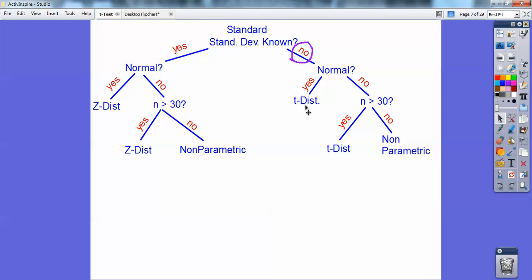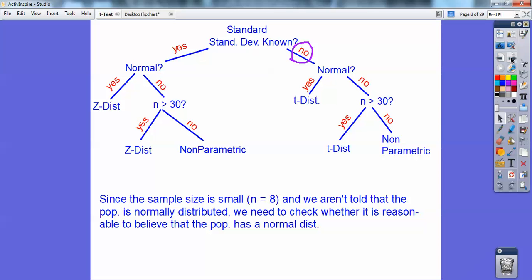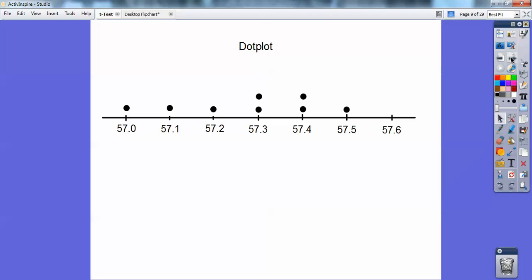We know that the standard deviation is not known, so I'm going to go down this direction. Is it normal? If it is, I can use the t-distribution. If it's not normal, then does my central limit theorem say I can still continue to use the t-distribution? My sample size is only 8, so we're going to create a dot plot and see if there's any non-normality.